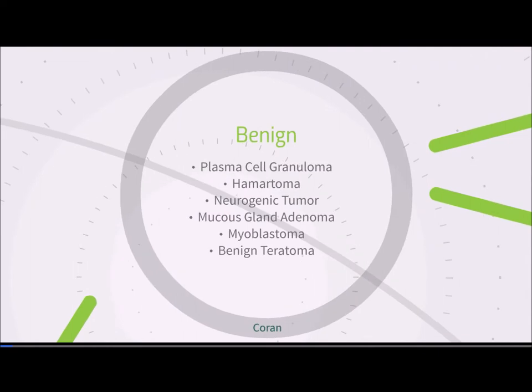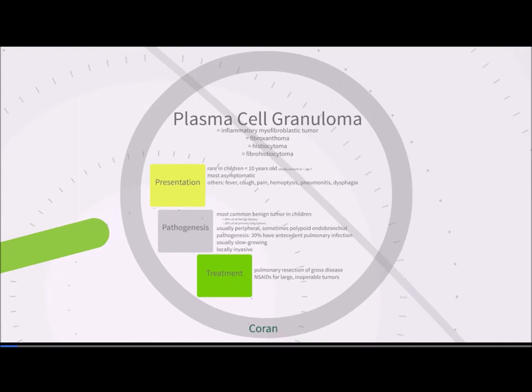Benign lung tumors include plasma cell granuloma, hematomas, neurogenic tumors, mucus gland adenomas, myoblastomas, and benign teratomas. Starting with plasma cell granuloma — this is a condition of many names. It is also called inflammatory myofibroblastic tumor, fibroxanthoma, histiocytoma, and fibrohistiocytoma.